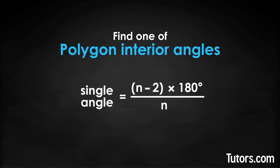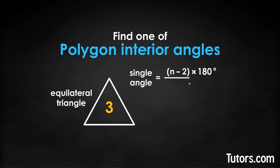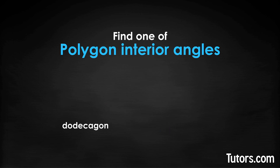The new formula looks very much like the old formula — we just divide by the number of sides. Testing it for the equilateral triangle, we can see one interior angle is 60 degrees. Now let's tackle a dodecagon. Remember what the 12-sided dodecagon looks like.